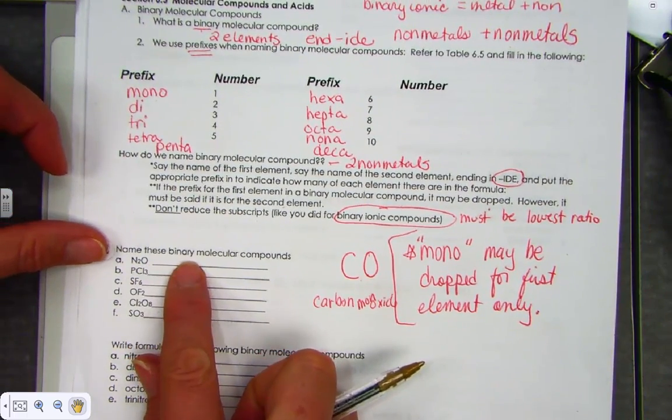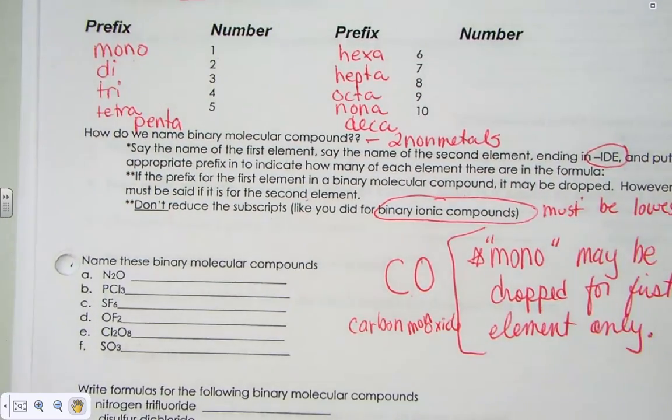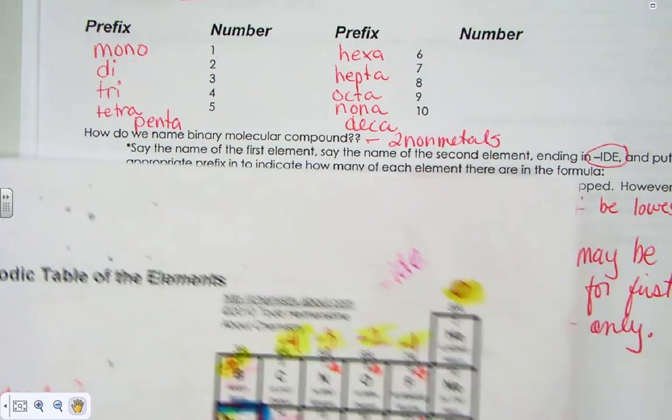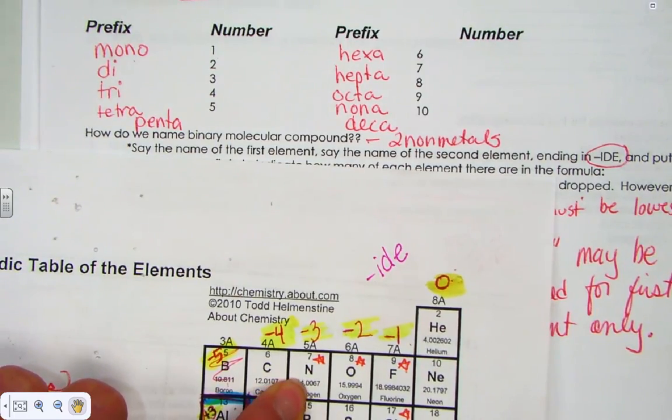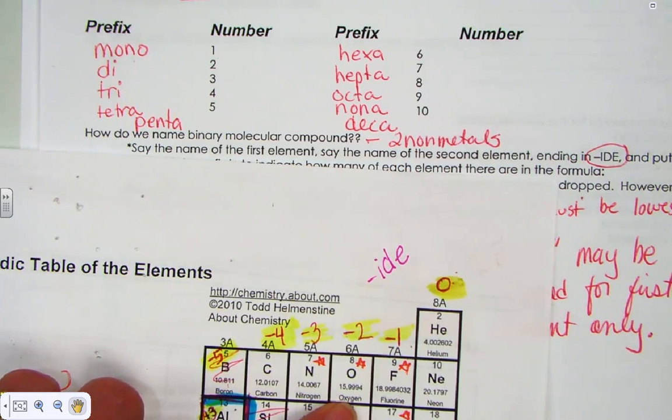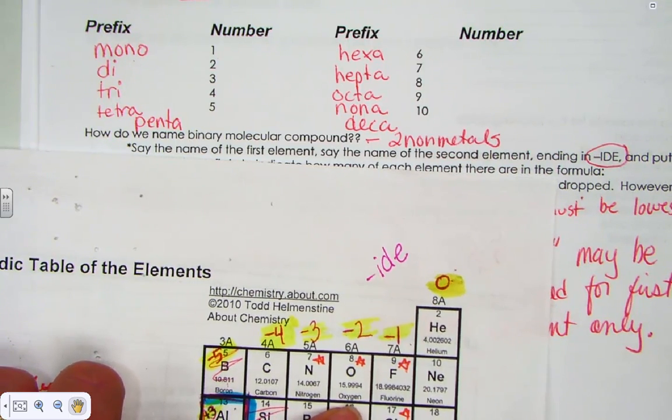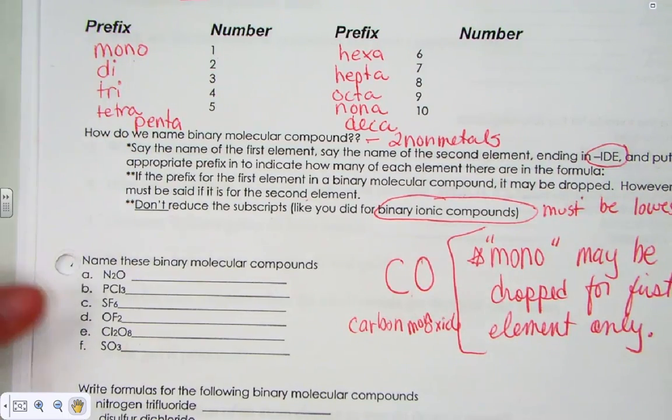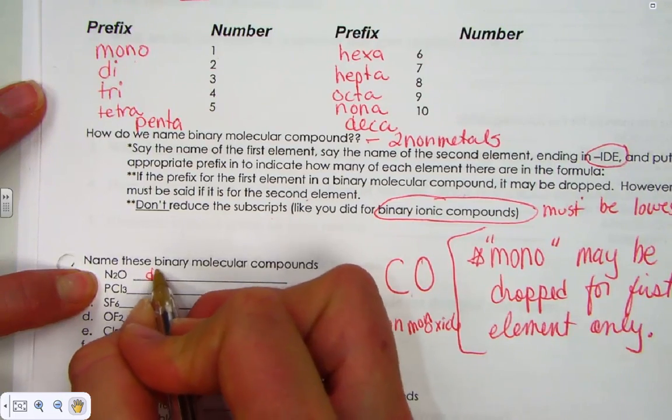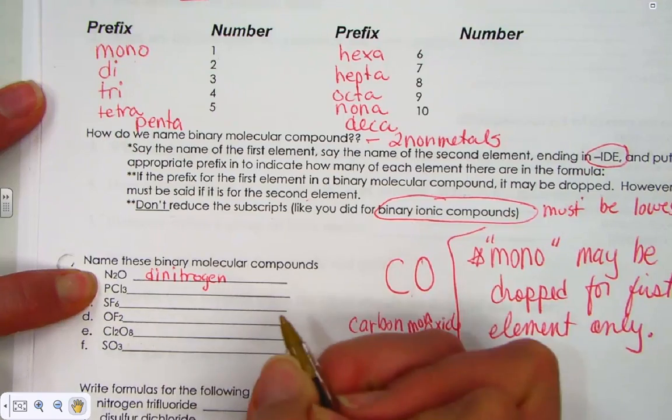Let's practice. We're going to say the names of these binary molecular compounds. The formula N2O. Notice N is a nonmetal. O is a nonmetal. Categorizing this binary molecular compound. We simply say the name of the first element, nitrogen. Say the name of the second element, ending in ide. Oxide. And put on the appropriate prefix. The prefix for two is di. So the first name, dinitrogen.